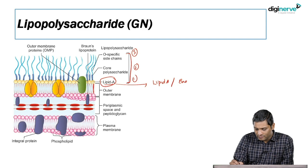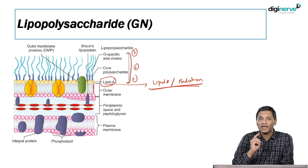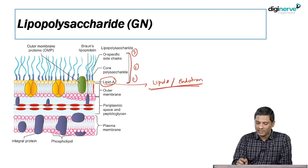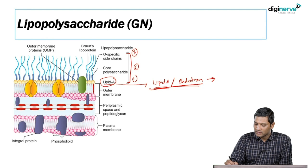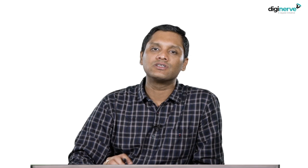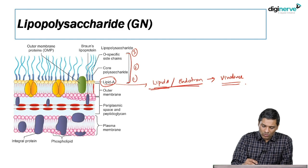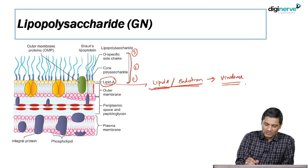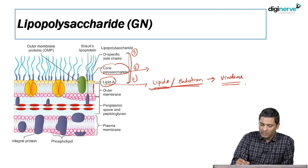Gram-negative bacteria have endotoxin in the cell wall — endotoxin is nothing but the lipid A part of the lipopolysaccharide. Endotoxin is responsible for the virulence of gram-negative bacteria; it induces inflammation inside the body and stimulates the immune response of the human body. The next part of LPS is the core polysaccharide, which is composed of 10 to 12 sugar moieties.